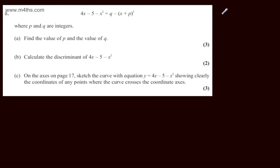I'm just going to rewrite this in the form ax squared plus bx plus c. So if we have ax squared plus bx plus c, we can write this quadratic as minus x squared plus 4x minus 5.